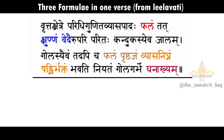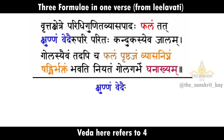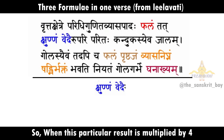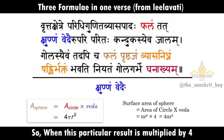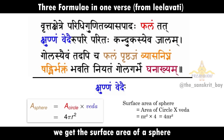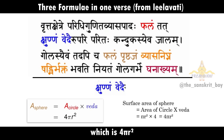Next is kshunnam vedaihi. Veda here refers to 4, so when this particular result is multiplied by 4, we get the surface area of a sphere, which is 4 pi r square.